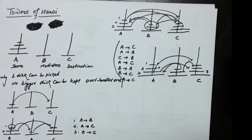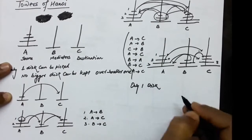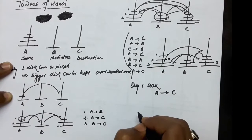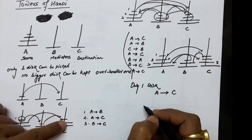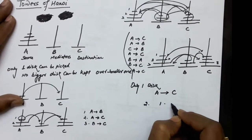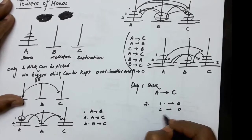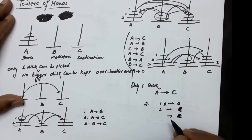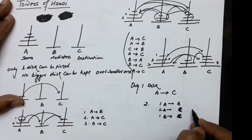So we have taken three examples. With one disk, the disk is transferred from source to destination. With two disks: one disk is transferred to the mediator, one disk is transferred to the destination, and the disk in the mediator is transferred to the destination — three movements total. With three disks: two disks are transferred to the mediator, one disk to the destination, and the two disks from the mediator are transferred to the destination — three plus one plus three equals seven steps.